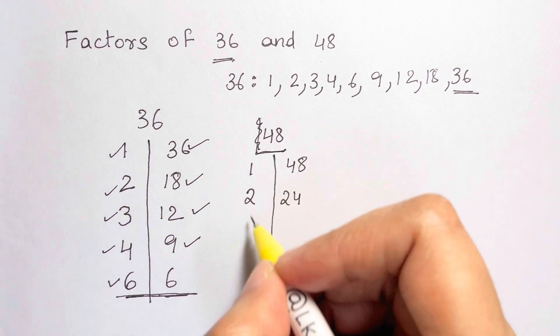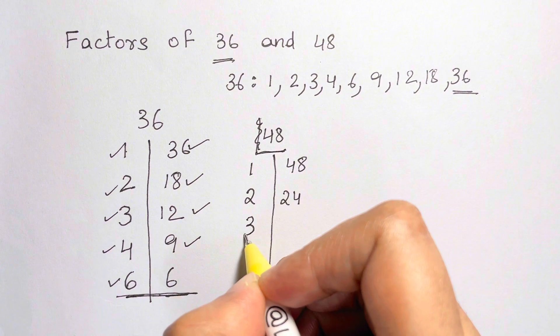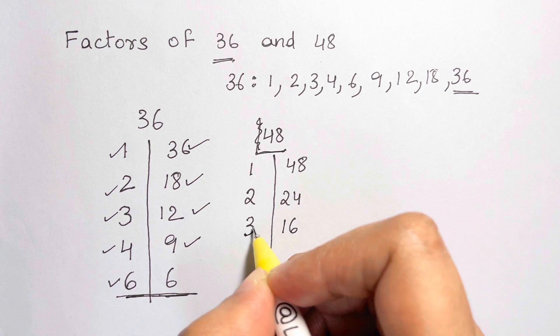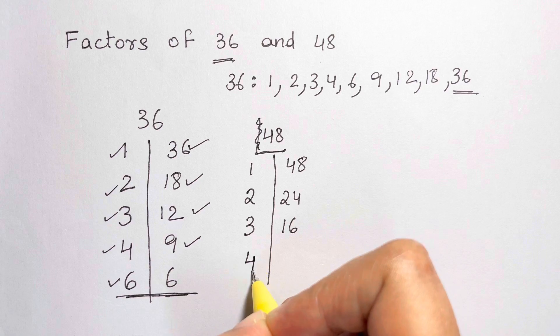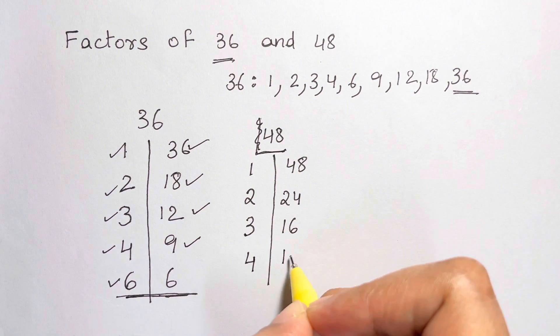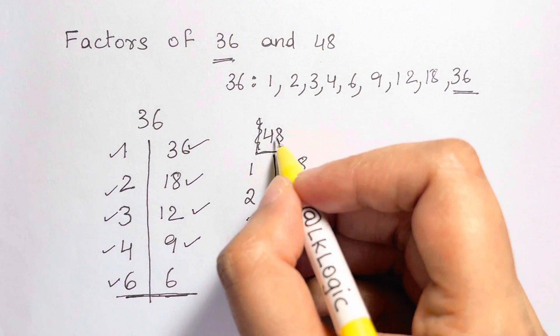And then the next number after 2 is 3. 48 divided by 3 gives me 16. 3 times 16 is 48. Next is 4. So, 48 divided by 4 is 12. 4 times 12 is 48.